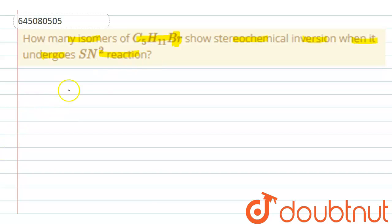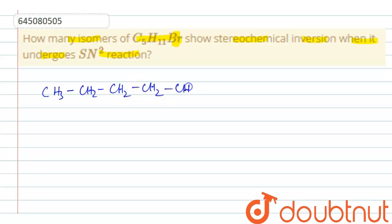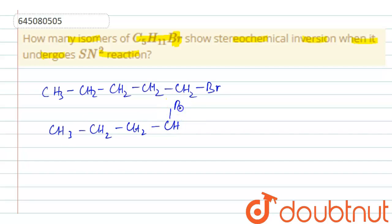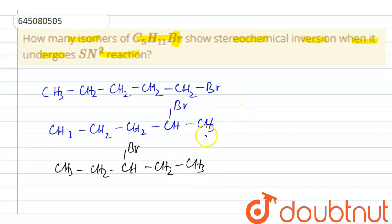First, let us draw the isomers of C5H11Br, or bromopentane. The straight-chain isomers are: CH3-CH2-CH2-CH2-CH2Br (1-bromopentane), then CH3-CH2-CH2-CHBr-CH3 (2-bromopentane), and CH3-CH2-CHBr-CH2-CH3 (3-bromopentane). These are the straight-chain isomers.